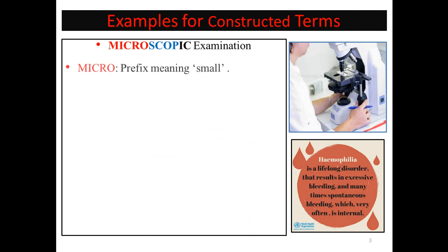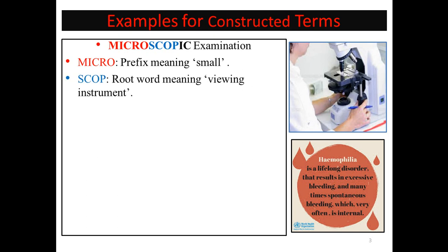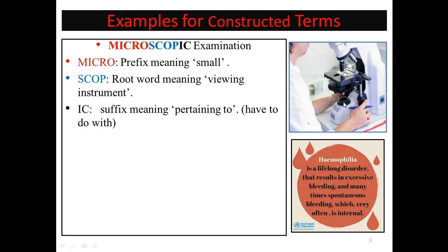For example, 'microscopic examination': 'micro' is a prefix meaning small, 'scope' is a root word meaning a viewing instrument, and '-ic' is a suffix at the end of the word meaning pertaining to or having to do with. So 'microscopic' means something small to be seen by this instrument, pertaining to examination through the microscope.